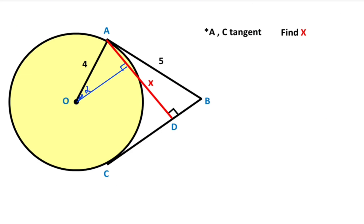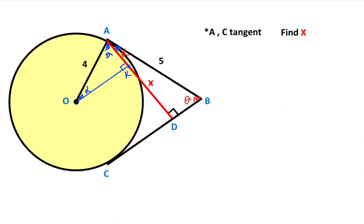Let's call this angle alpha and this angle theta. We know that alpha plus theta equals 90 degrees. Point A is given as a tangent point, which means angle DAB must equal alpha. Therefore angle ABD equals theta. If you focus on this triangle and this triangle, they have the same angles — these two triangles are similar.